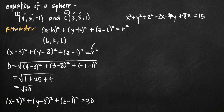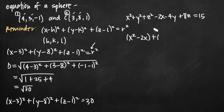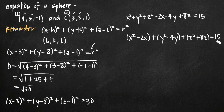Now, if we want to use a given equation of a sphere to find the center and radius, we need to group our variables together and then complete the square for each variable so that we have a perfect square on x, y, and z. We'll be able to pull out values for h, k, and l to find the center, and the radius will be on the right-hand side. We group: x squared minus 2x, plus y squared minus 4y, plus z squared plus 8z, equals 15.